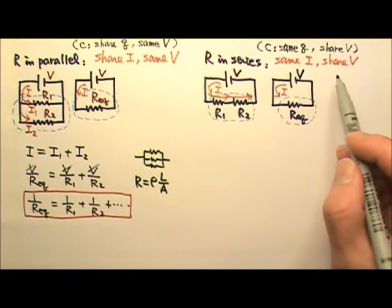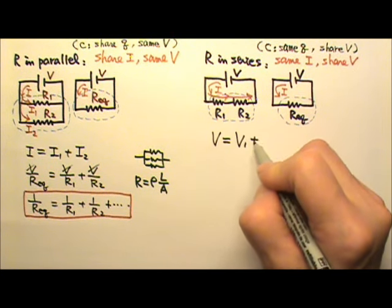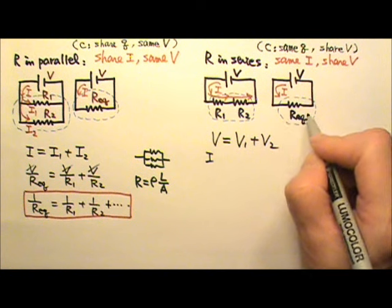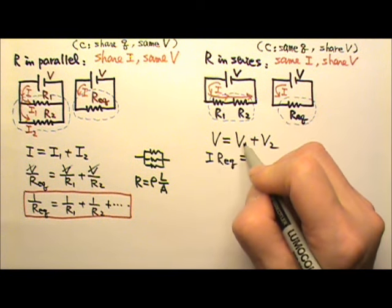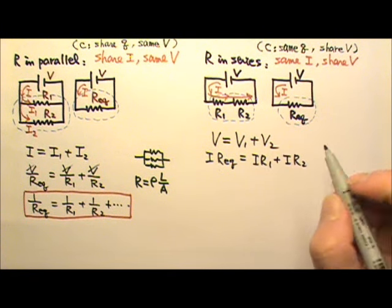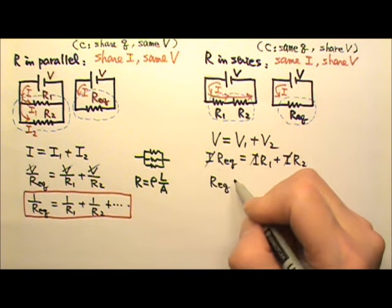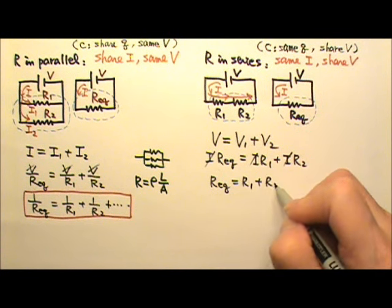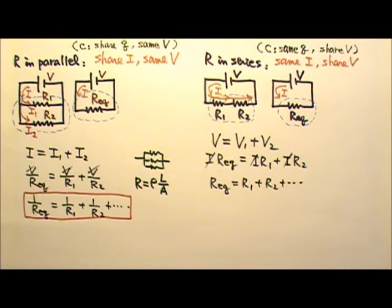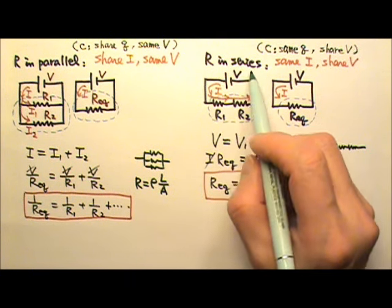Because the two resistors have to share the voltage, that means V equals V1 plus V2. And since V equals IR, the voltage V is the current times the equivalent resistance. V1 is I times R1, and V2 is I times R2, since all the currents are the same. So this gives us the equivalent resistance equals R1 plus R2. If we have more than two resistors in series, we just keep on adding them. This is the equation we use to find the equivalent resistance for resistors in series.